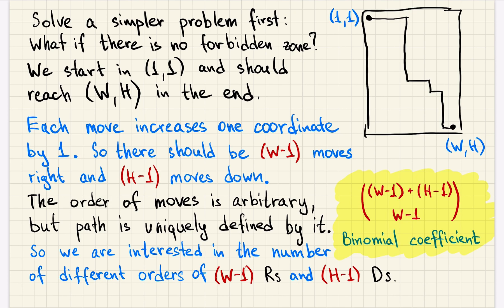Let's introduce coordinates. We start at coordinates (1,1) and we finish at coordinates (W,H). Each move to the right will increase x-coordinate by 1 and each move down will increase y-coordinate by 1, so there should be exactly w-1 moves to the right and exactly h-1 moves down. The order of the moves can be arbitrary, but the order of the moves uniquely defines the path.